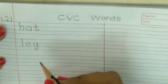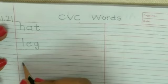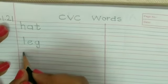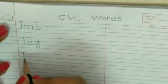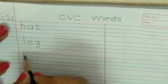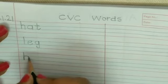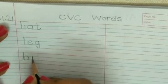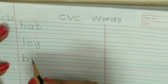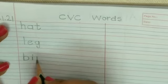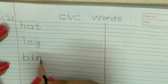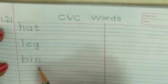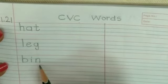Next word, we will write bin. B-I-N bin. From first red line to second blue line, standing line. Go up, make a reverse curve. B. First blue line to second blue line, standing line. Put a dot. I. Standing line, go up, make a curve, come down. N. B-I-N bin.